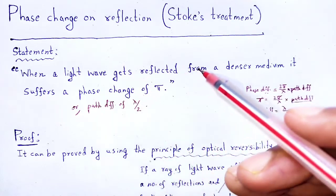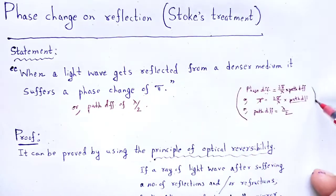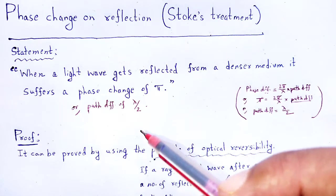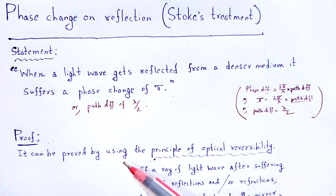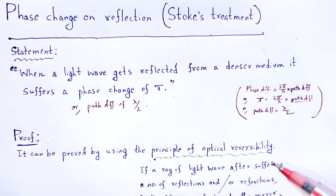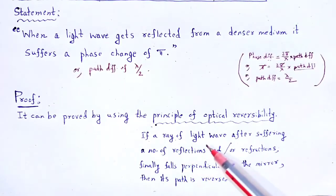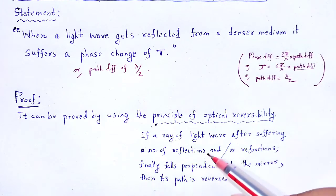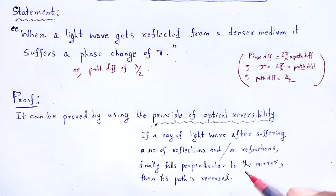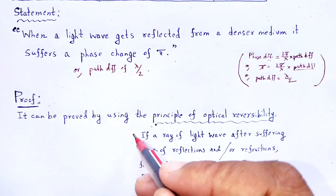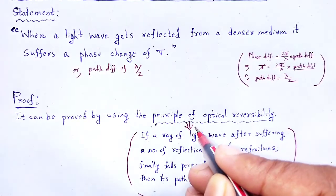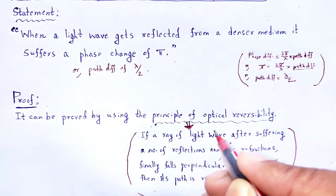When a light wave gets reflected from a denser medium, it suffers a phase change of pi, or we can say the path difference will be λ/2. Now we can prove this Stokes treatment by using the principle of optical reversibility. If a ray of light, after suffering a number of reflections and refractions, finally falls perpendicular to the mirror, then its path is reversed — that is the principle of optical reversibility.